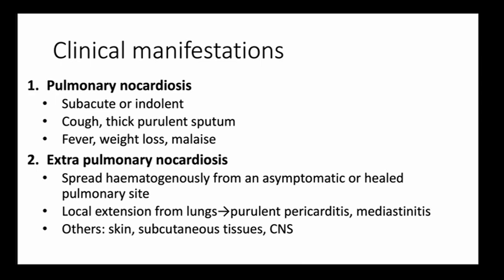Clinical manifestations of Nocardia include pulmonary nocardiosis, which is subacute or indolent. Patients present with cough, purulent sputum, fever, weight loss, and malaise — very similar to TB. Extra-pulmonary nocardiosis results from hematogenous spread from an asymptomatic or healed pulmonary site, or local extension from the lungs causing purulent pericarditis, mediastinitis, or involvement of skin, subcutaneous tissues, and the central nervous system.